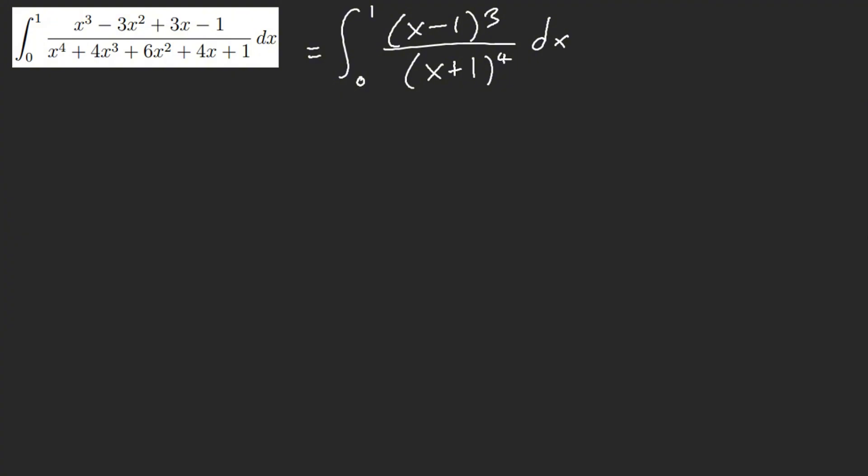So what happens if I want to go bashy? Because going bashy is probably the first thing that everyone would think about, and that is letting u equal x plus 1. Then we have from 1 to 2, we have u to the power of 4. Oh god, but then u minus 2 cubed.